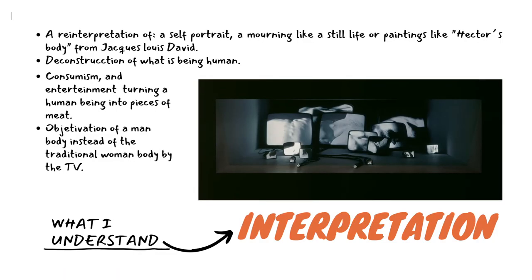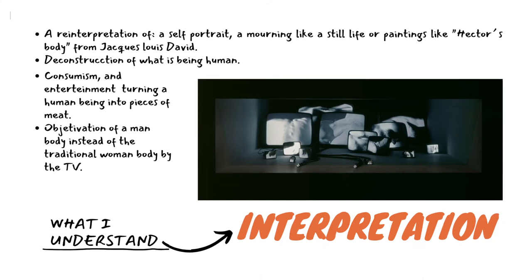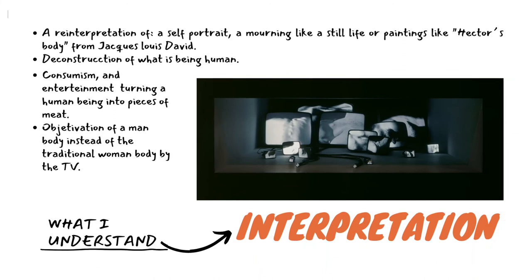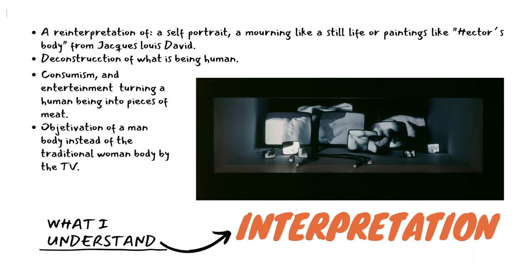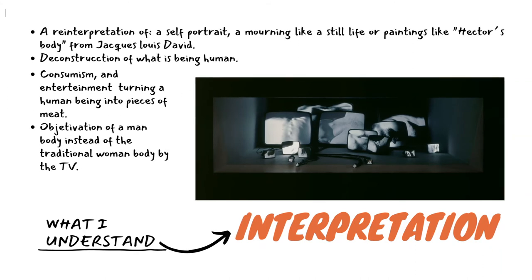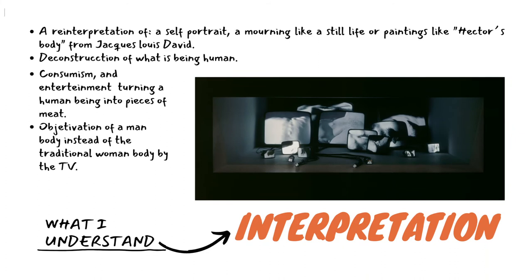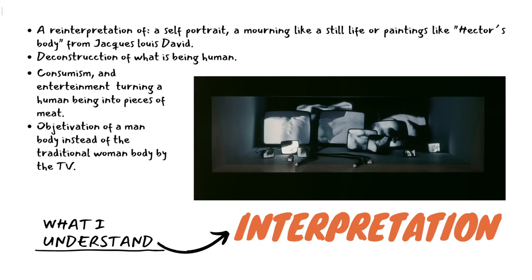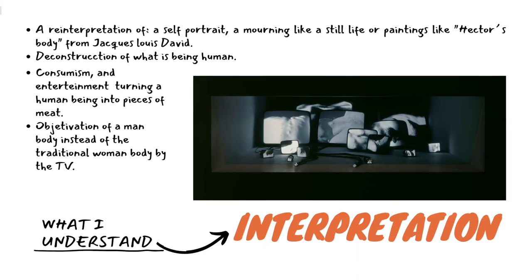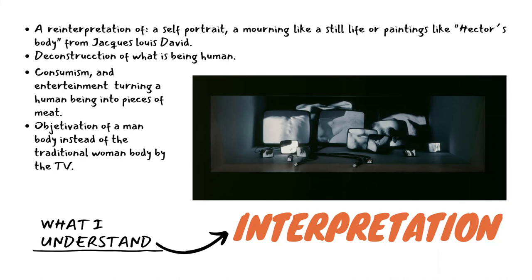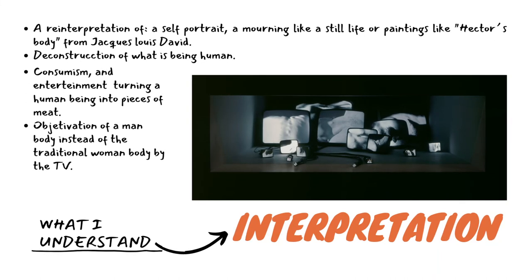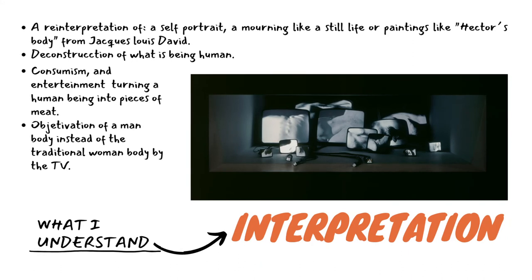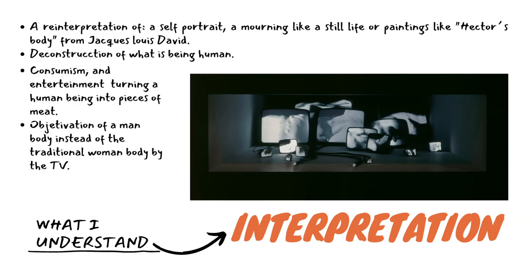Finally, the interpretation: Inasmuch as It Is Always Already Taking Place by Gary Hill can be understood as a reinterpretation of a self-portrait or a still life, maybe as a mourning, or more specifically a reinterpretation of the figure of a painter from the 19th century, Jacques-Louis David. But it can also be read as the construction of what it means to be human, or as a critique of consumerism and entertainment turning a human being into pieces of meat — showing the objectification of a male body instead of a traditional female body by TV and mass media entertainment.